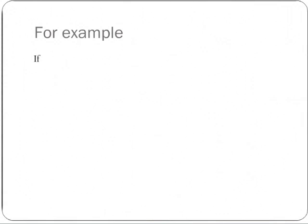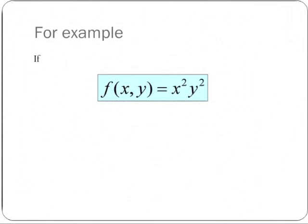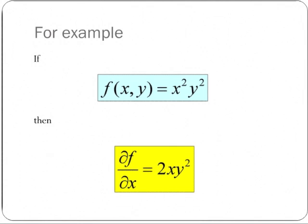For example, if f of x, y is x squared y squared, then df dx is 2xy squared, because we've differentiated as though y squared is a constant number.